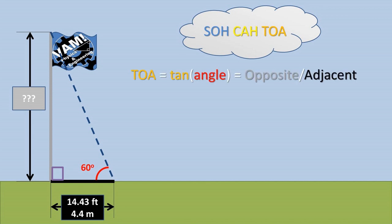The TOA in SOHCAHTOA stands for the tangent of the angle is equal to the opposite side from the angle divided by the adjacent side from the angle of the triangle. Being that we have the angle and the side length adjacent to the angle, and we are trying to solve for the opposite side of the angle, we'll be using this part of SOHCAHTOA to solve the problem.